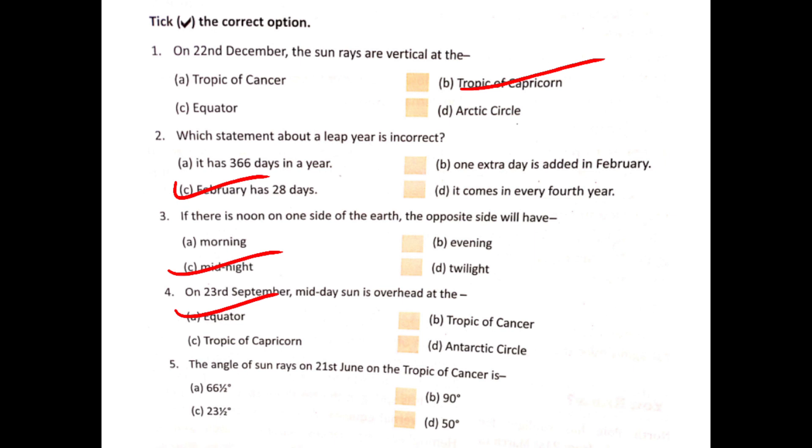The angle of sun ray on 21st June on the Tropic of Cancer is: Here we are asking the angle of the sun's ray. How much is the angle of 21st June? So the sun is at a 90 degree angle.